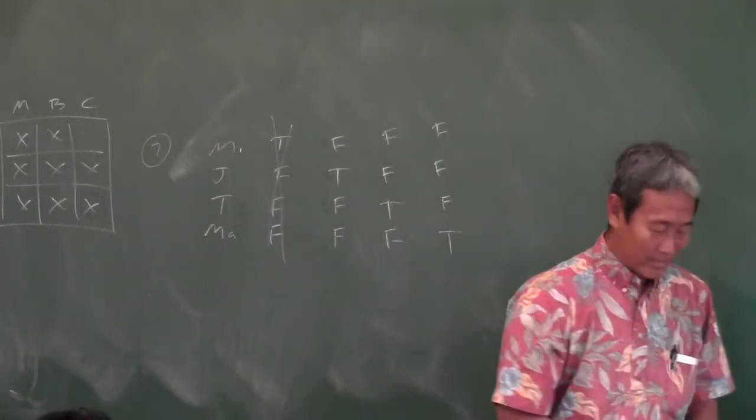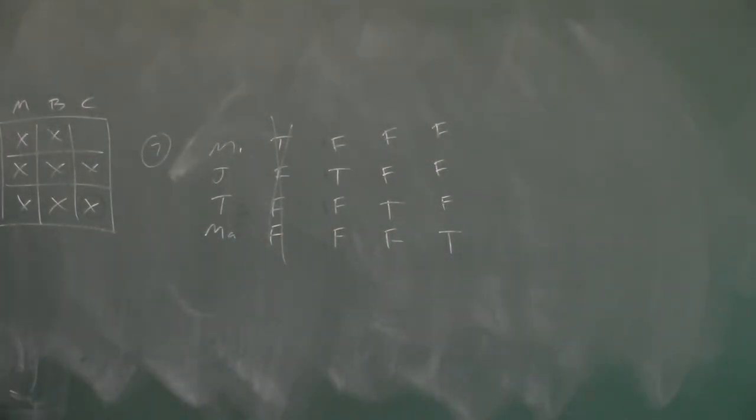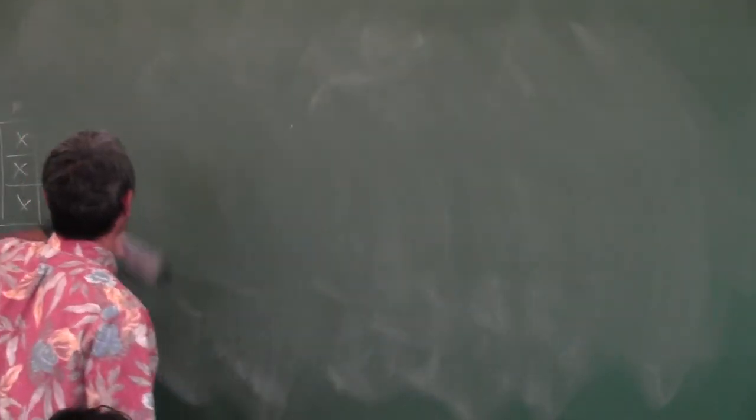We only have 13 minutes left to learn. We determine if an argument is valid or invalid — there are three ways. I already told you the first two. First: make a truth table — whenever the premises are true, if the conclusion is true, it's valid. Second: if the conjunction of the premises implies the conclusion and that statement is a tautology — true every time — then the argument is valid.